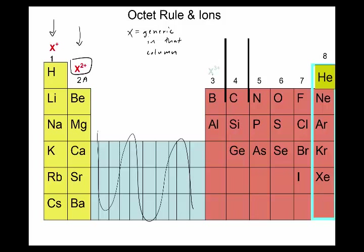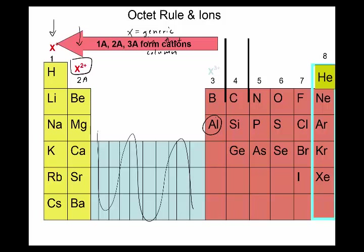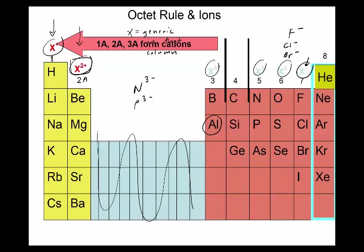Column 3 makes 3+, though you pretty much only see aluminum in ionic compounds. Columns 5, 6, and 7 make anions: column 5 makes 3- (nitrogen and phosphorus both usually make 3-), column 6 makes 2-, and column 7 (the halogens) makes 1-. We usually don't write the '1' — just fluoride, chloride, bromide, etc. Pause and add these charges above each column on your periodic table.